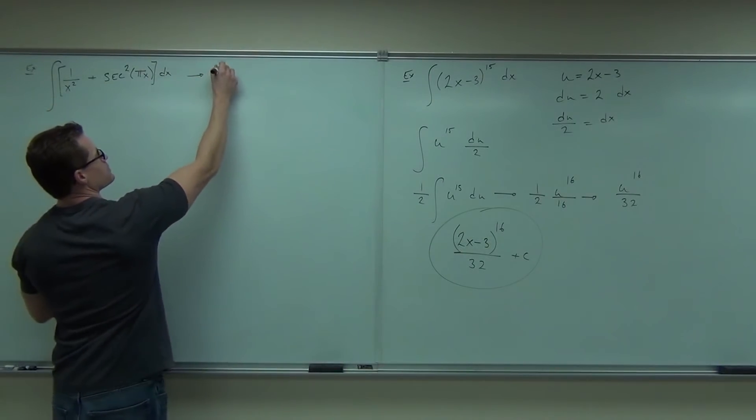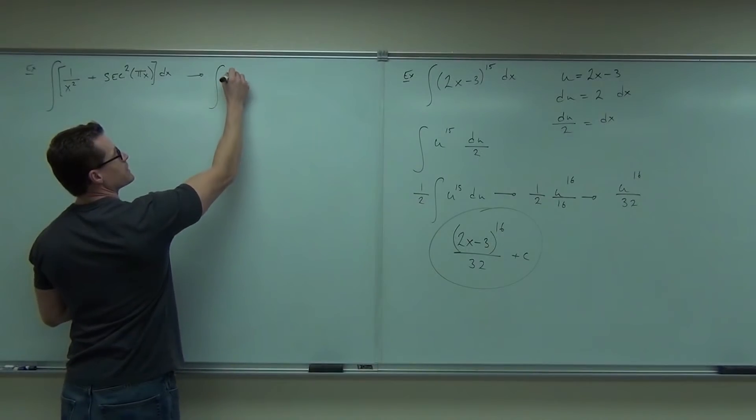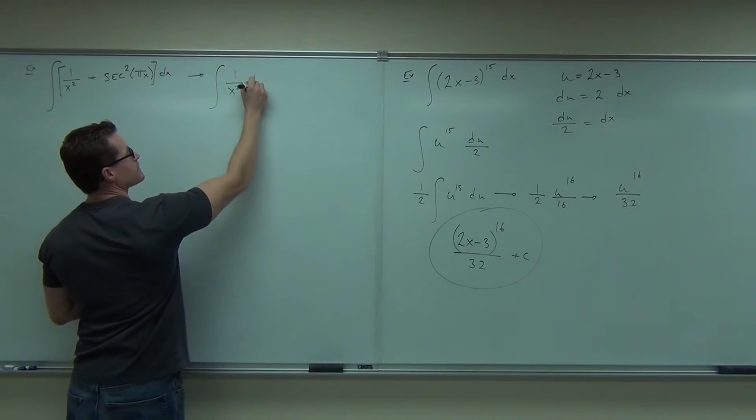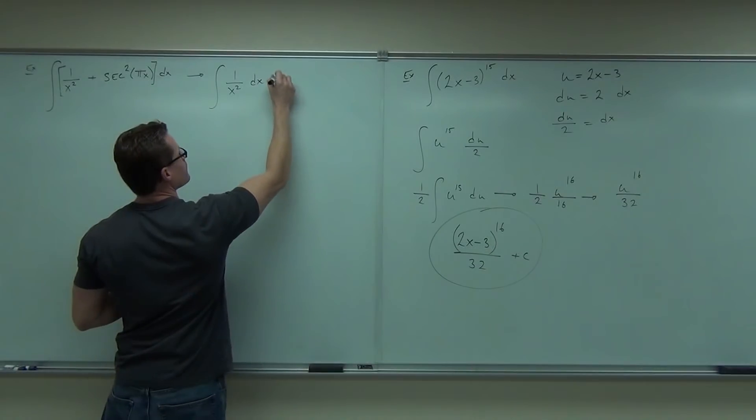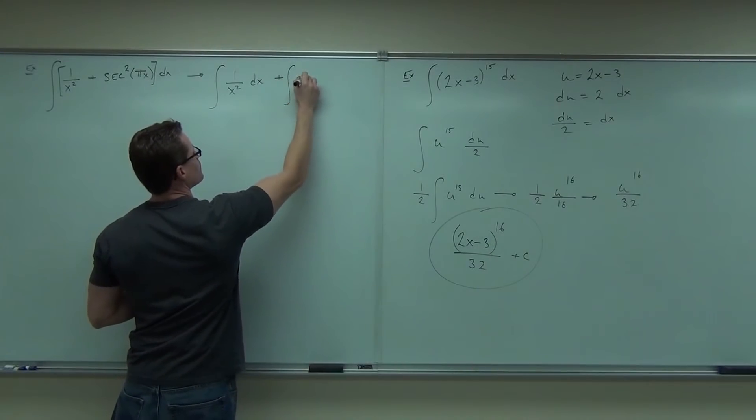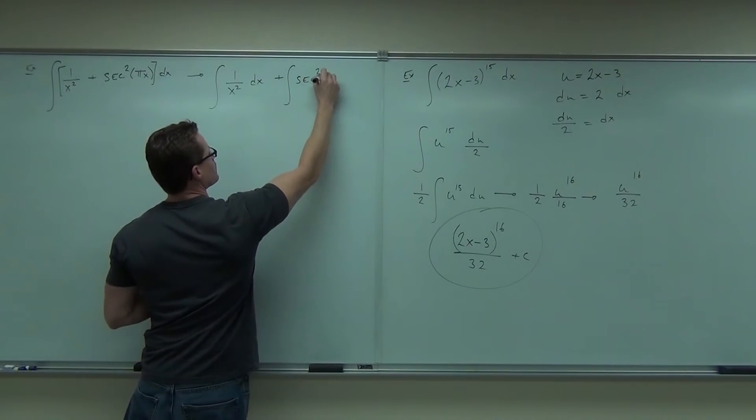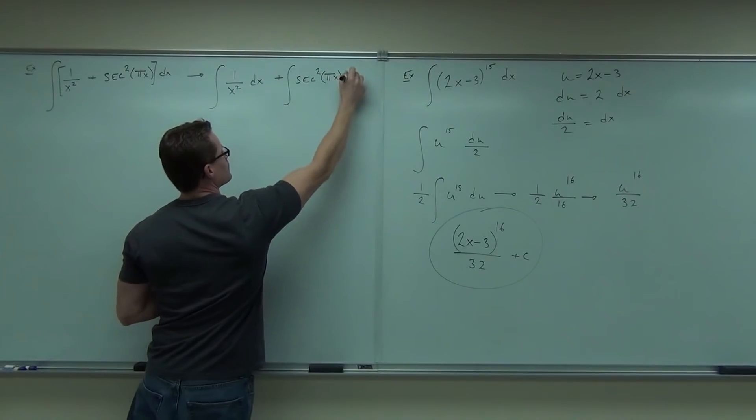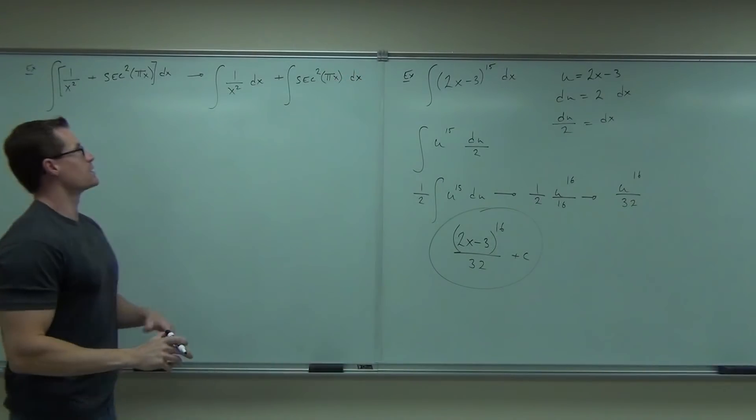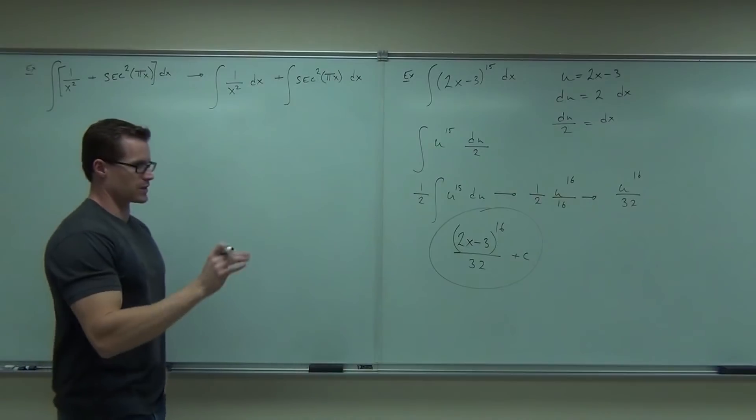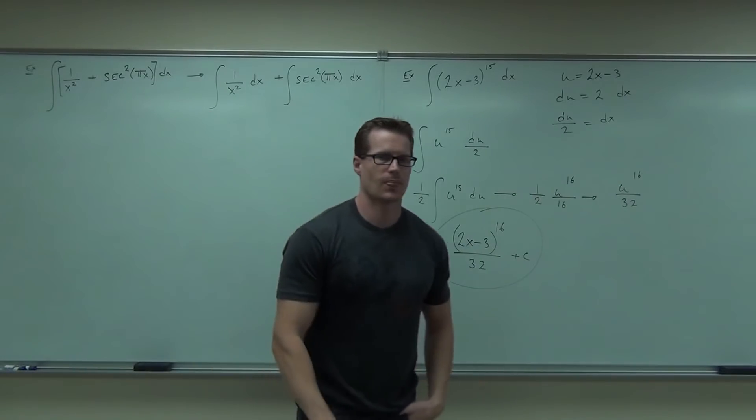And I know I did show this to you last time, but you can look at this as 1 over x squared dx. Don't forget the dx. And secant squared of pi x. Don't forget the dx.